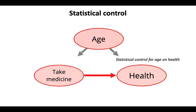Another way to do it is to use statistical control — take lots of observations of medicine, health, and age, then use a statistical regression to control for the effect of age. Formally, what that does is break the causal connections between these variables so that we can measure the causal effect more clearly.